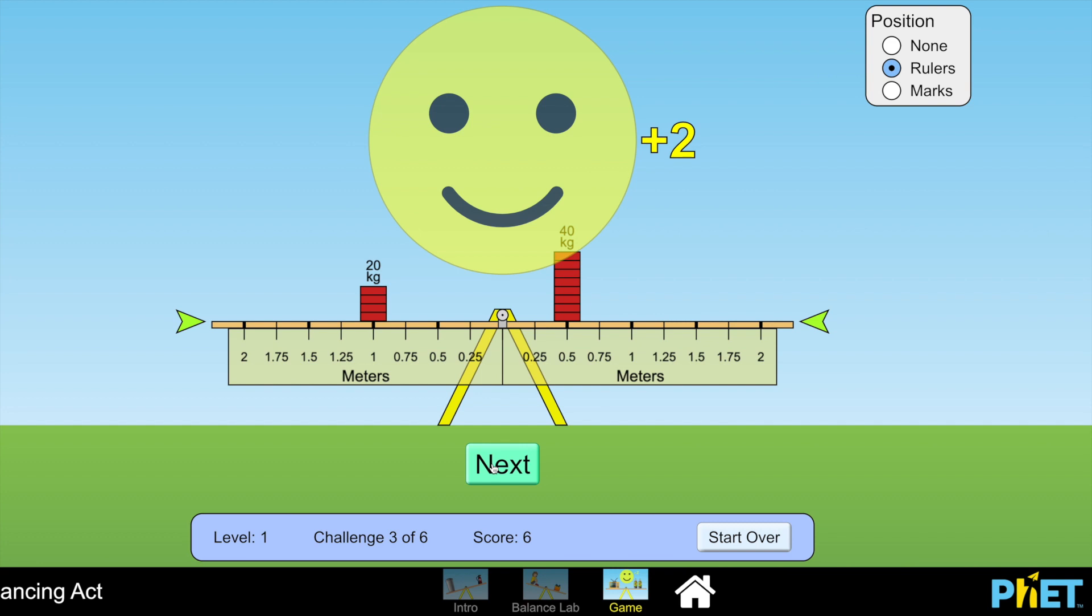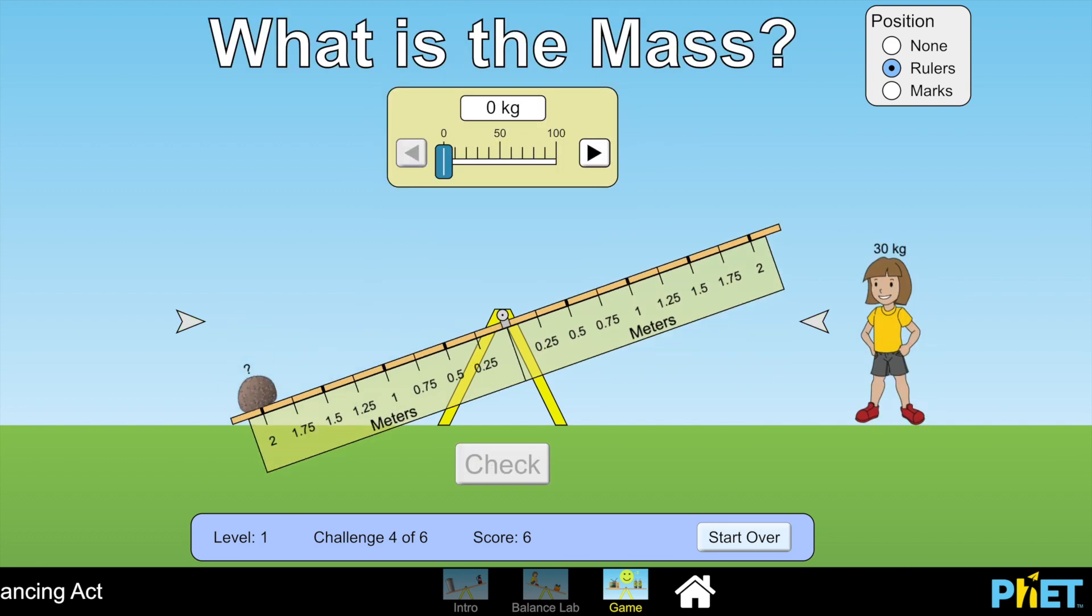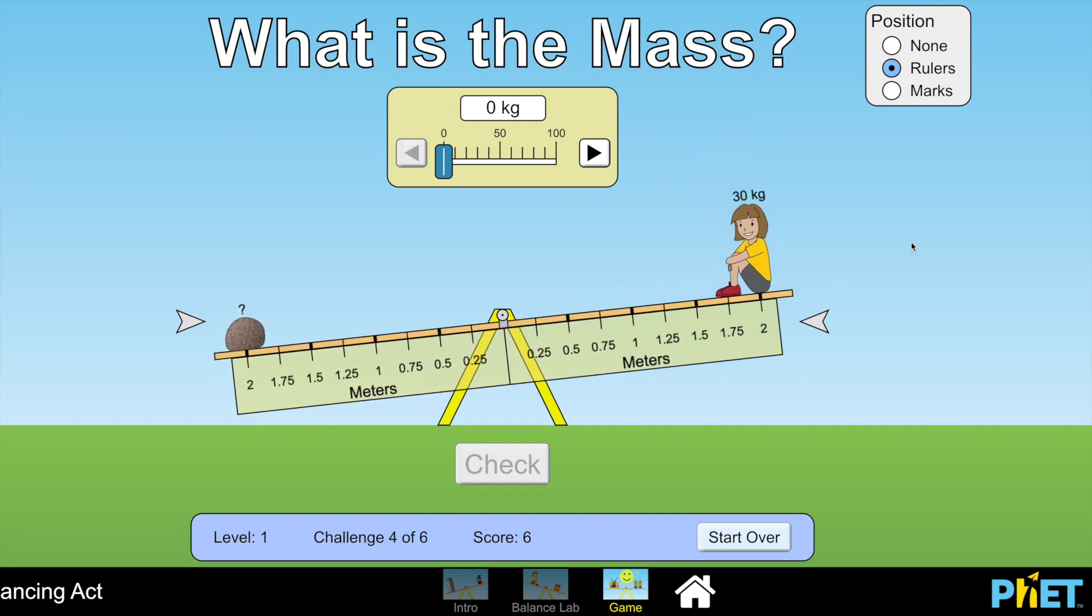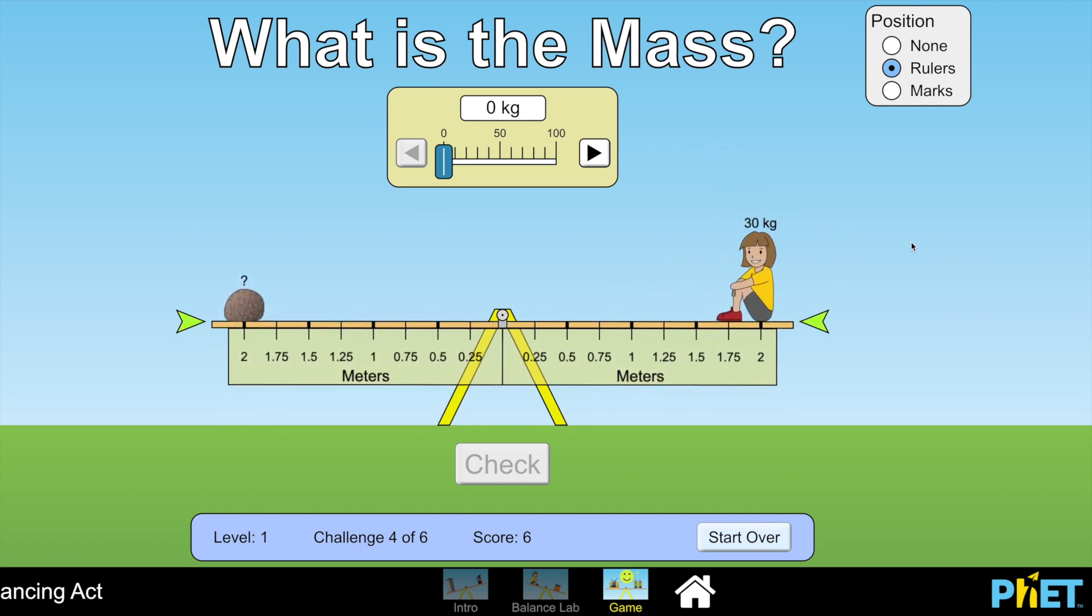Let's try another. What's the mass of this object? We can find out by placing this person at different distances and identifying where it balances out. Because the 30kg person balances out with this rock, we know that the rock also has a mass of 30kg, as they are both equal distance from the pivot.